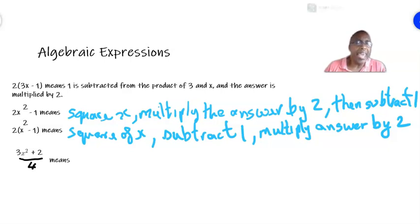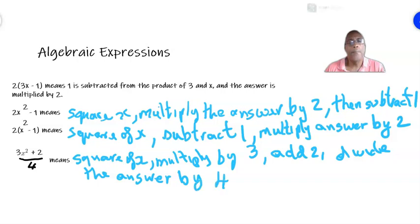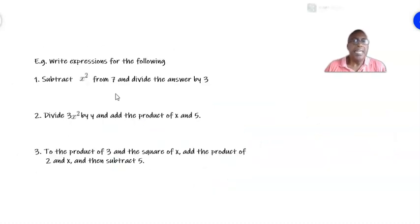Next one, I have 3X squared plus 2 all over 4. It means we work out the top and then divide by 4. So we first square X again. Then multiply by 3. Then add 2 to the answer. And then divide the answer by 4.